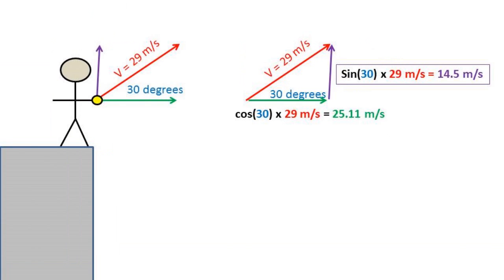The first step of this problem is to break down the 29 meters per second velocity into both x and y components. The way we do this is by taking the sine of the launch angle times the velocity to give us the velocity in the y direction. So sine of 30 degrees times 29 meters a second equals 14.5 meters a second. Then we can take the cosine of the launch angle times the velocity to give us our velocity in the x direction. So cosine of 30 degrees times the 29 meters a second equals 25.11 meters a second.